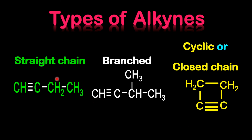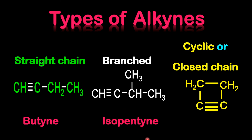Be very careful of carbons with multiple bonds in exams and tests. For the straight chain example with four carbons and a triple bond, the name is butyne. For the branched example with five carbons, since it's not in a straight chain, we call it isopentyne. For the cyclic example with four carbons in a closed chain, we place 'cyclo' in front to get cyclobutyne.